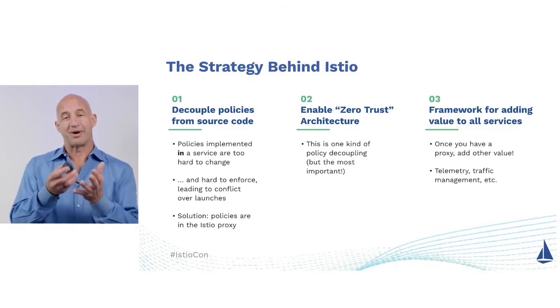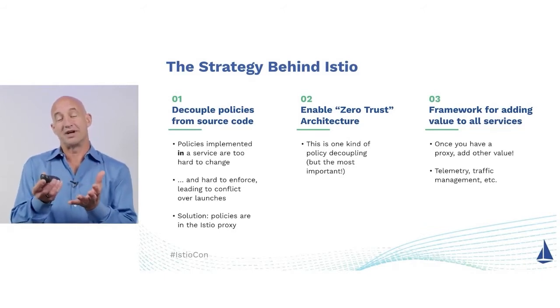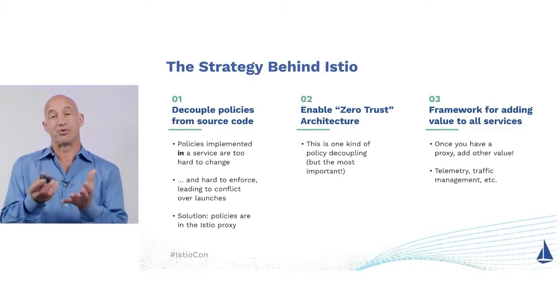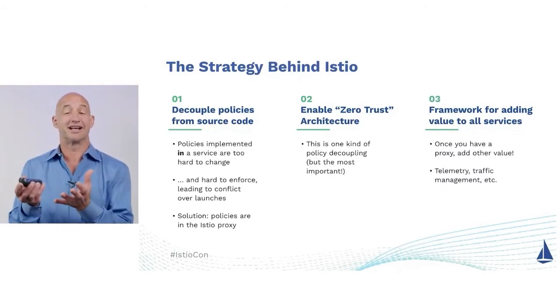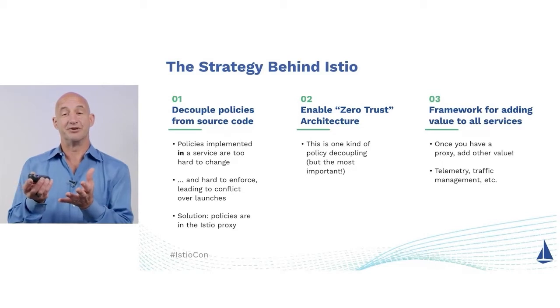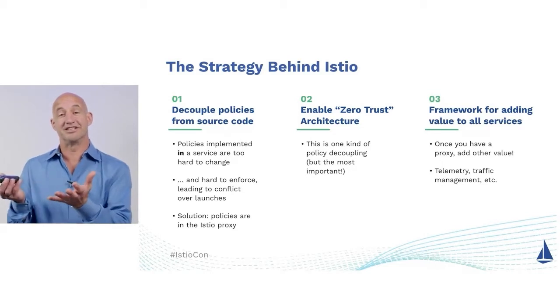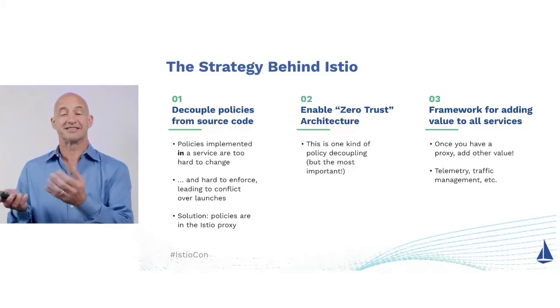Zero trust is one particular kind of policy decoupling — how do we get a zero trust architecture, which I'll define in the rest of this talk. That's an important policy we get out of having this decoupling. And then once you have a proxy implementing policies, it turns out it's useful for traffic management and telemetry, so you use it as a framework in general for adding value to microservices. So what is zero trust, and how did we get here?